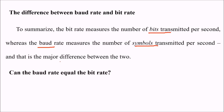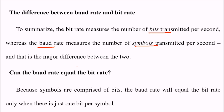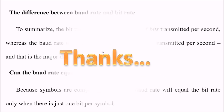The question arises: can the baud rate equal the bit rate? Since symbols are comprised of bits, a symbol can be a combination of one bit, two bits, or three bits. The baud rate will equal the bit rate only when there is just one bit per symbol. This is the key difference between bit rate and baud rate.